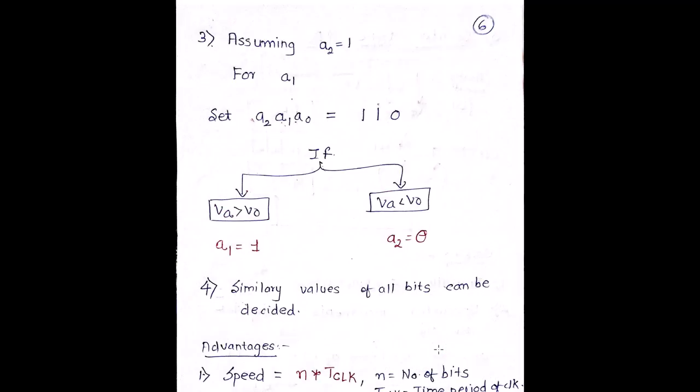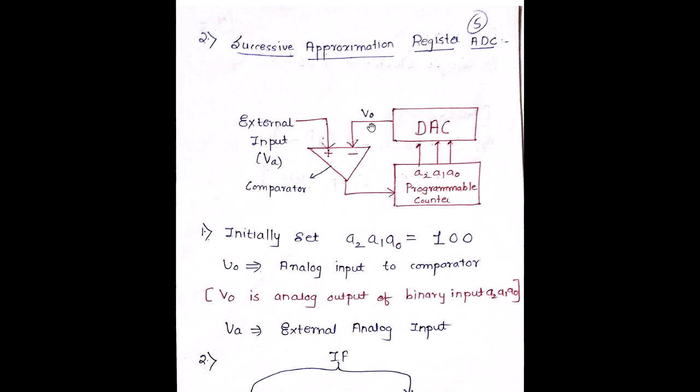So what is done is initially I'm setting A2 as 1 and A1, A0 as 0. Right now we'll be talking about A2, whether it should be 1 or 0. Then I have A2 is set as 1 now. Now we'll try for A1. So as you know, A2 is already set as 1, it is decided as 1. For A1, let us try to assume now as 1 and A0 is 0.